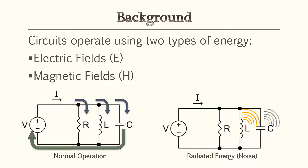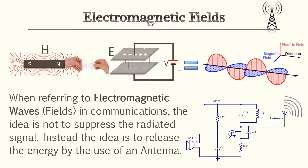Referring back to fundamentals of electronics, energy flows within a circuit and returns to the source or other components as the circuit functions. These two types of energy are known as electrical waves or fields and magnetic fields or waves. Any energy waves not absorbed within the circuit are released or radiated. This radiated energy is typically undesirable, which is referred to as noise. In circuits that consist of both electrical fields and magnetic fields combined, they create what is known as electromagnetic fields.